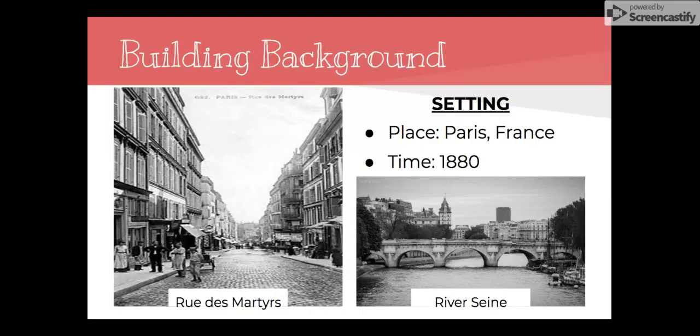The Necklace is set in Paris, France in the 1880s. If you look at the two pictures, these are two of the settings you'll see in the story. The first is the Rue de Martyrs, which is the street that the characters live on, and the other is the River Seine, which is a river that runs through Paris.